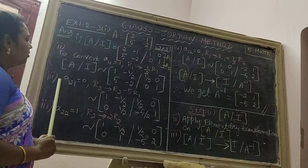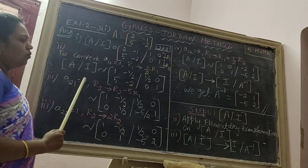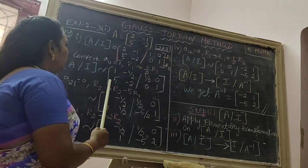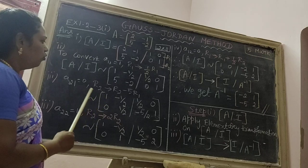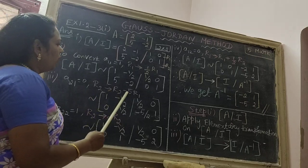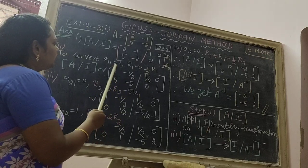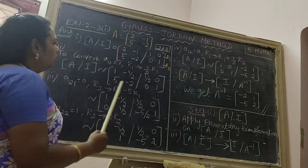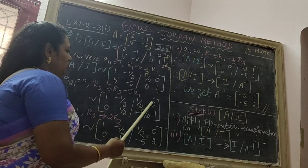Next step, we need to convert A21 equal to 0. Here A21, the number is 5. Therefore R2 implies R2 minus 5 R1. Multiply R1 by 5. We get the answer 1 minus 1 by 2, 1 by 2, 0.